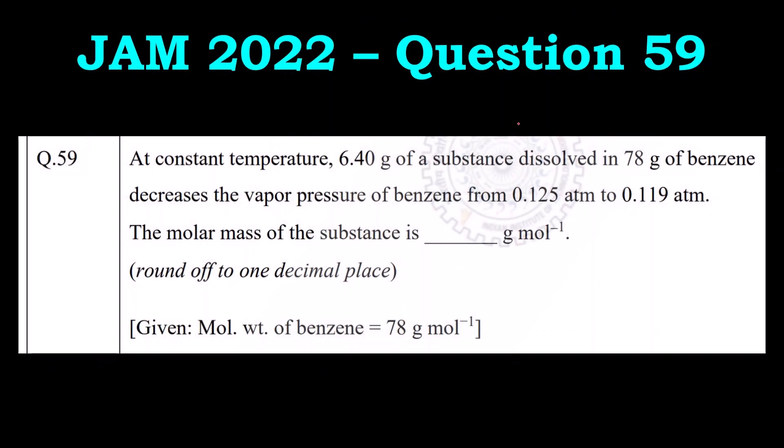Hello everyone. Welcome to Chemezon Complete Chemistry. This is question 59 of JAM 2022 paper. At constant temperature, 6.4 grams of a substance dissolved in 78 grams of benzene.